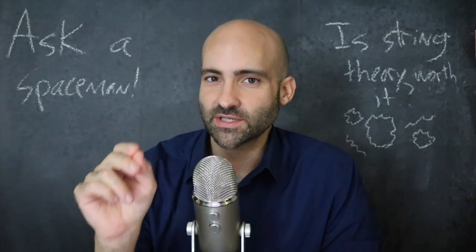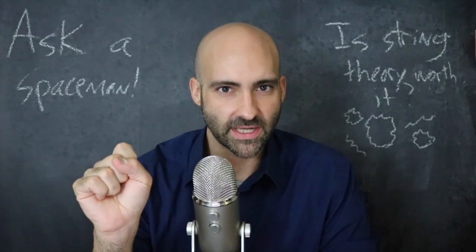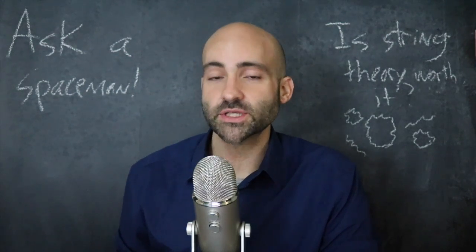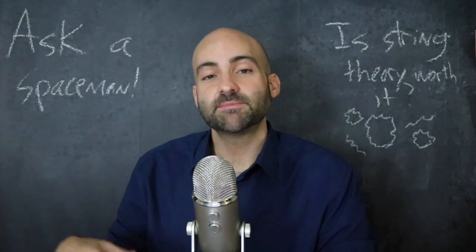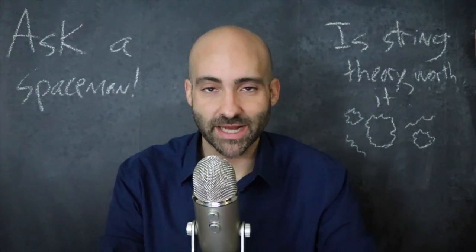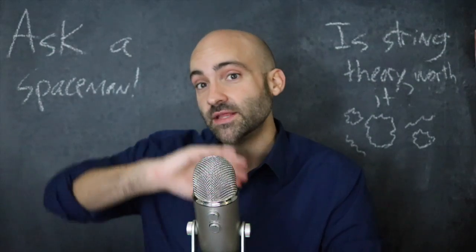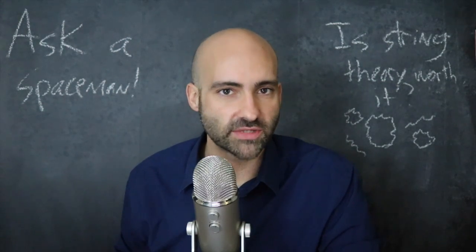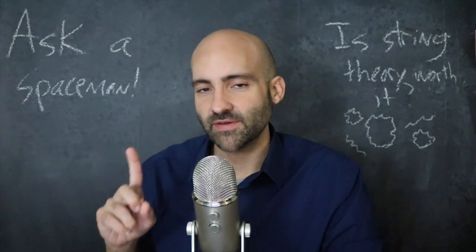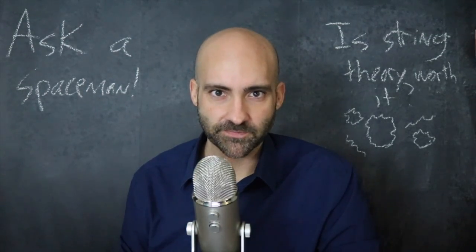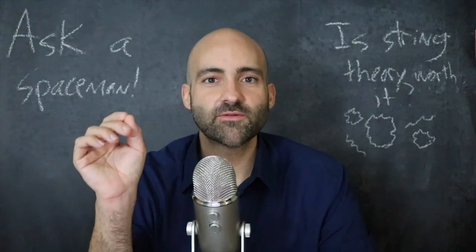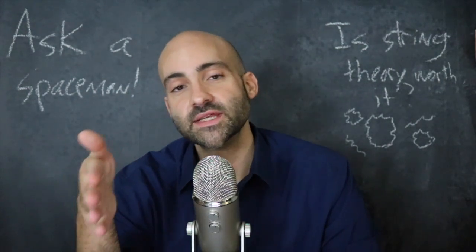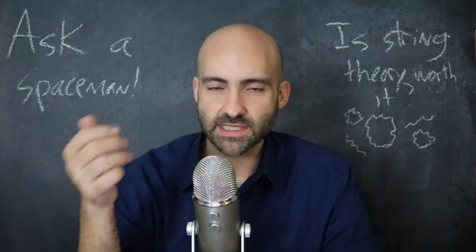There's one thing I haven't talked about yet in the development of string theory, and that's gravity. String theory was originally developed to understand the strong force, then expanded to try to include the electromagnetic force and the weak nuclear force, and then through supersymmetry explain electrons, quarks, neutrinos, and all the rest — but gravity still wasn't in that description, and this wasn't discovered until over a decade into its development.